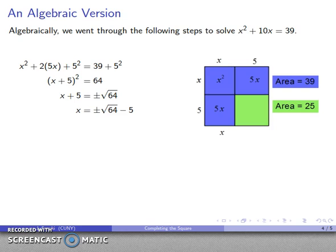And that tells me that x is plus or minus square root of 64 minus 5, which is to say it's either 8 minus 5 or it's negative 8 minus 5. And my two solutions, 3 and negative 13.